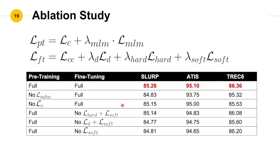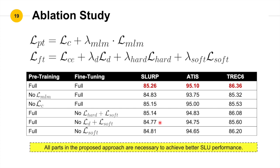Here is our ablation study. The first two rows are for the pre-training stage and the later three rows are for the fine-tuning stage. In pre-training, the masked language modeling is very important to adapt the model to spoken language and prevent catastrophic forgetting when we apply the contrastive loss. In the fine-tuning stage, self-distillation is very important to prevent the model from overfitting misleading labels. Overall, each component contributes positively to the final score.